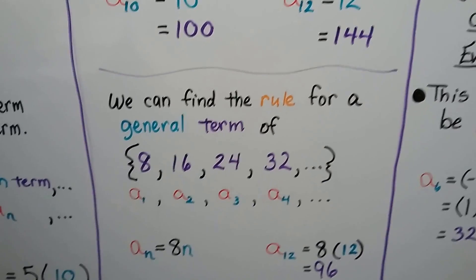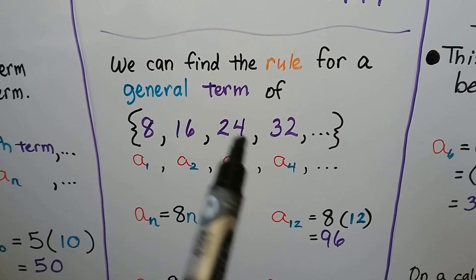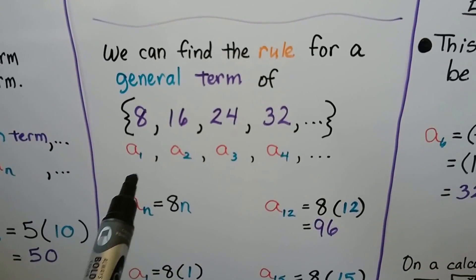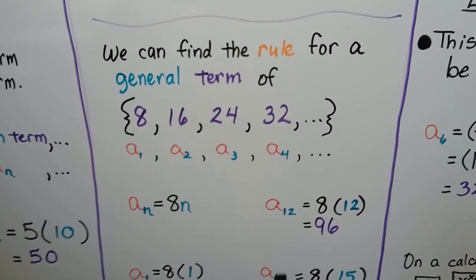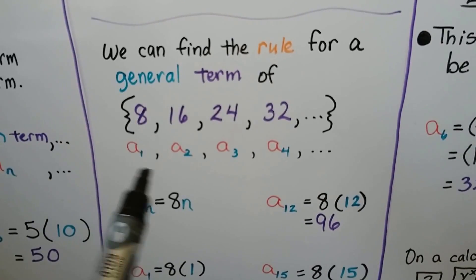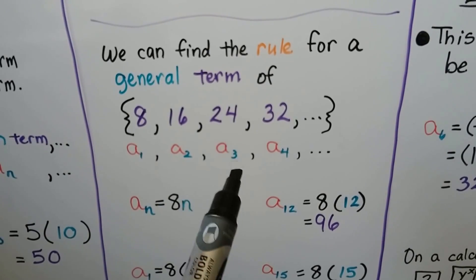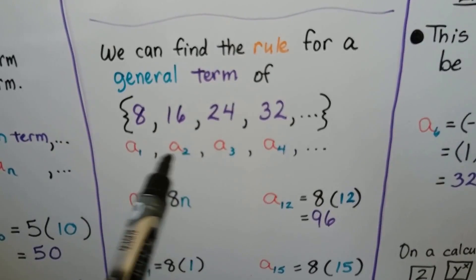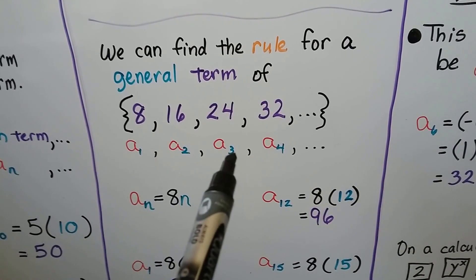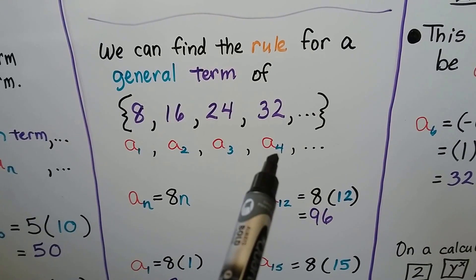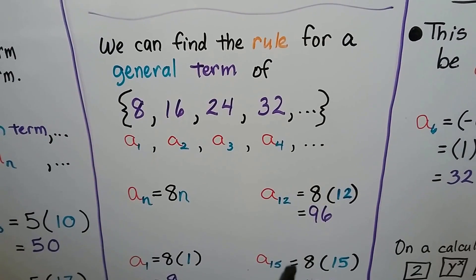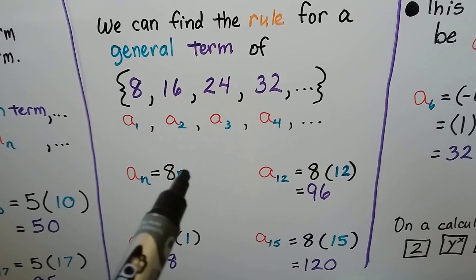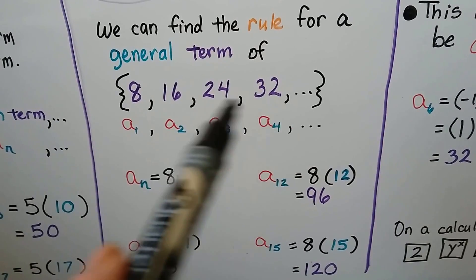We can find the rule for a general term of eight, sixteen, twenty-four, thirty-two. We just look at the numbers and see what's going on — what do they have in common? We have a one that became an eight, a two that became a sixteen, a three that became a twenty-four. They're all being multiplied by eight. One times eight is eight, two times eight is sixteen, three times eight is twenty-four, four times eight is thirty-two. So our general term is a sub n equals eight n — eight times n.